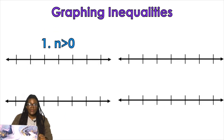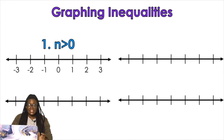When I'm graphing inequalities, I have n is greater than zero. So I'm gonna set up a number line, put an open circle at zero, and shade to the right.